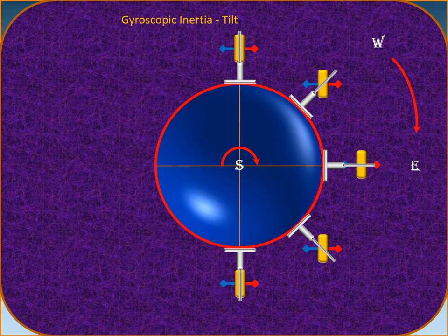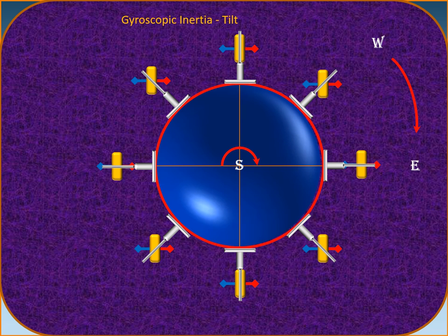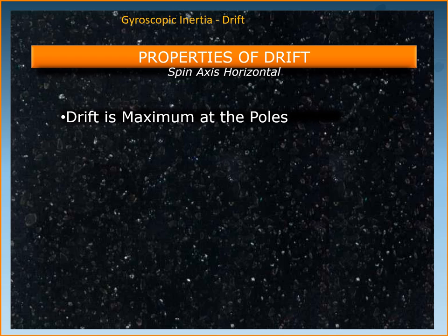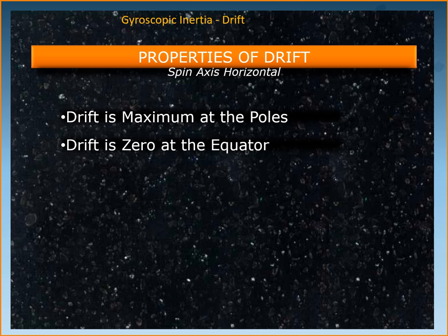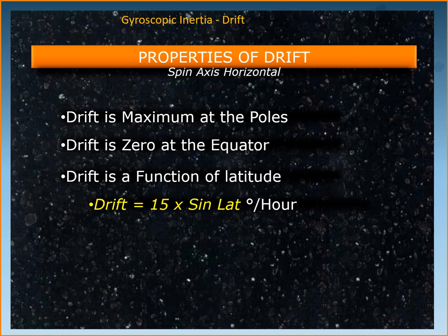Drift is the movement of the gyroscope axis around the horizontal plane and is maximum at the poles, reducing as you come down towards the equator, becoming absolutely zero at the equator. Drift is a function of latitude: drift equals 15 multiplied by sine of latitude, in degrees per hour. At the pole, latitude is 90°, so drift = 15 × sin(90°) = 15 × 1 = 15 degrees per hour, which is maximum. At the equator, drift = 15 × sin(0°) = 0.